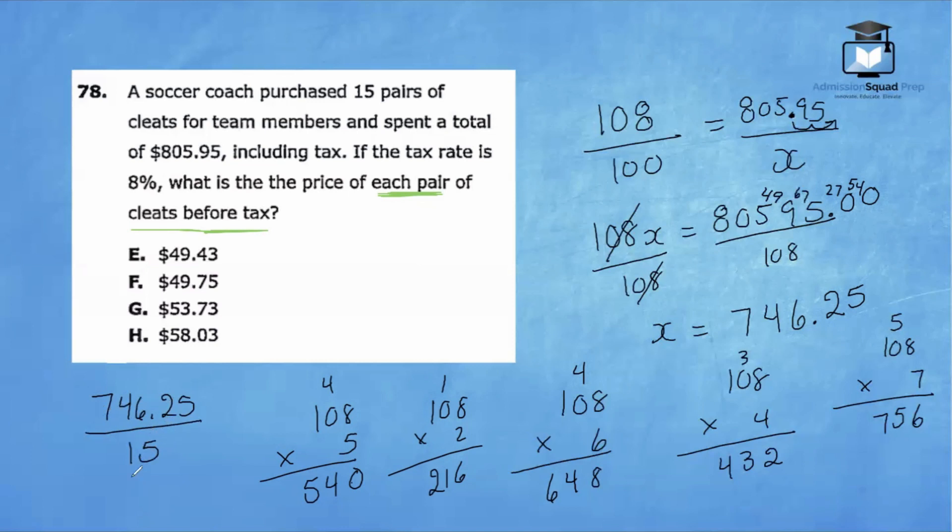We're going to take 746.25 and divide that number by 15. This is a lot of computation, so I hope you guys are ready. 15 into 74 goes four times because 15 times five is 75. 15 times four is 60. Our remainder is 14. So we have 146. I know that 15 times 10 is 150. So 15 times nine is going to be 135. So our remainder is 11. Let's add our decimal point.